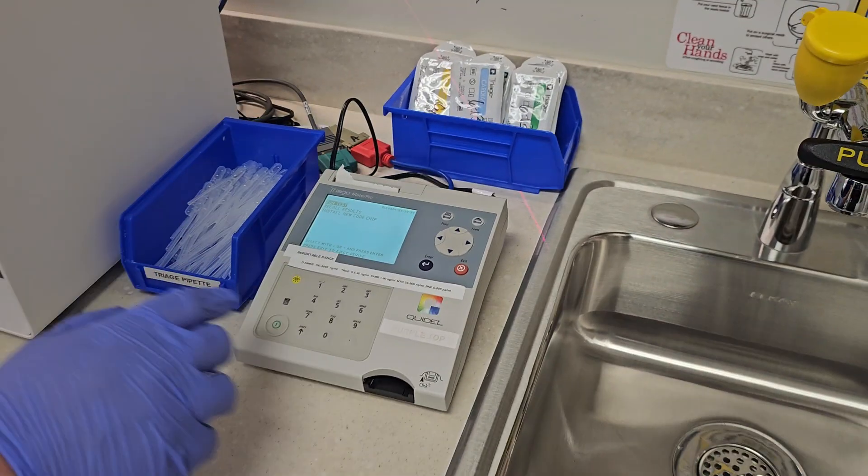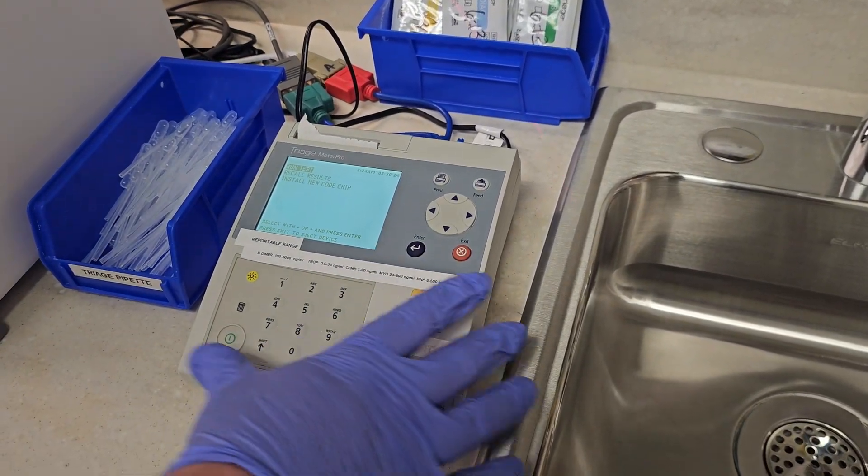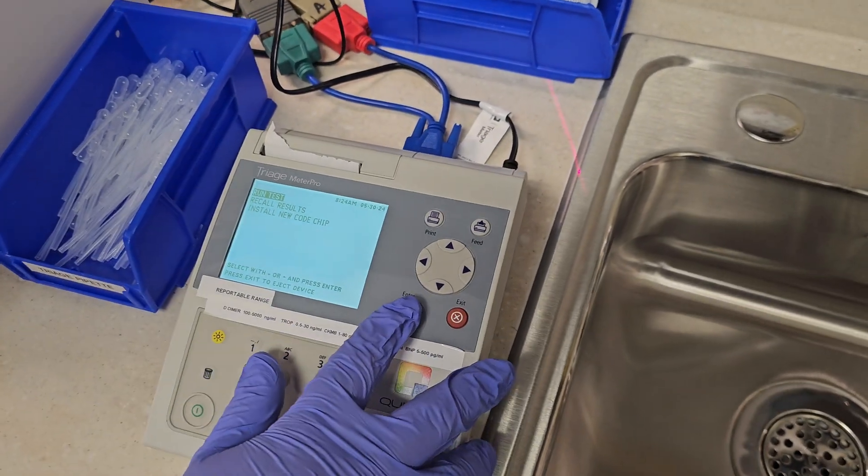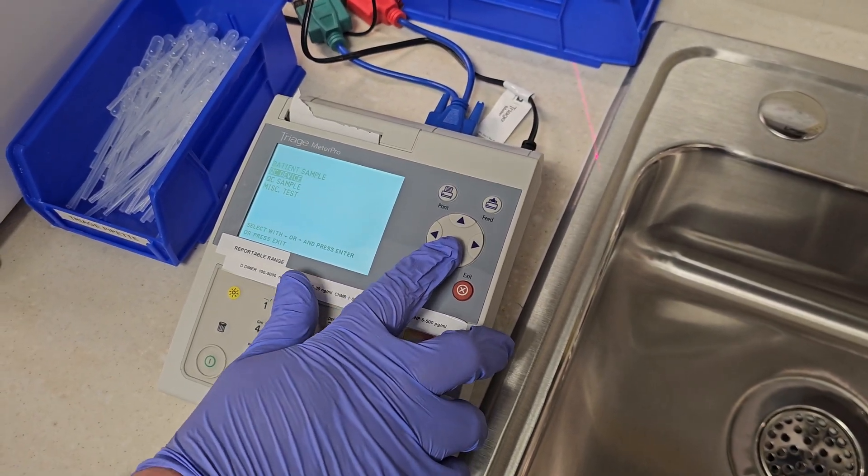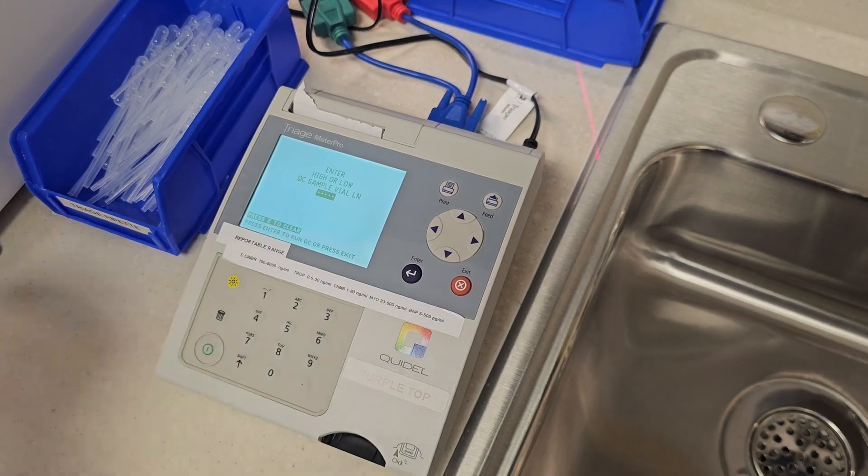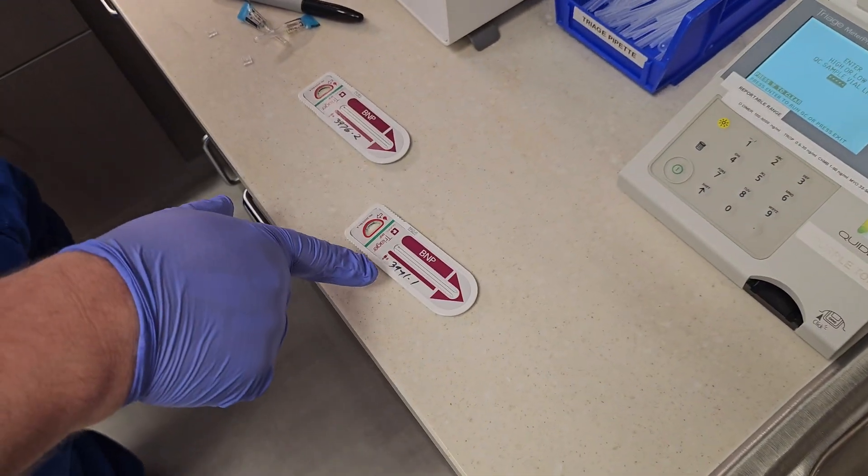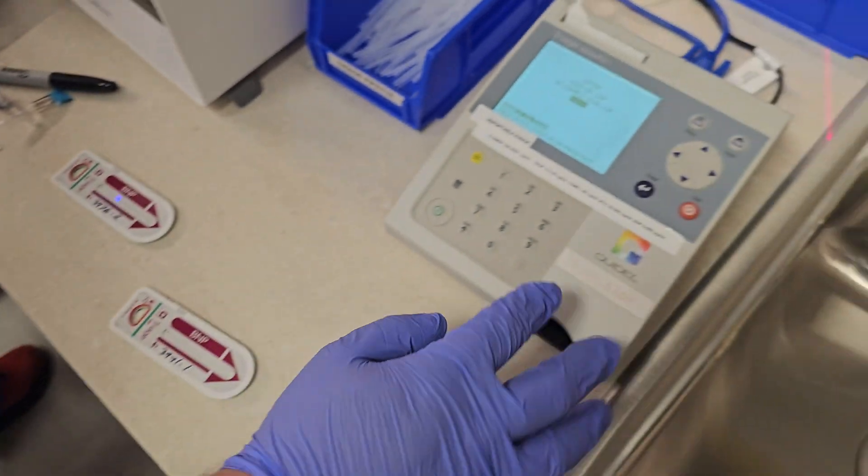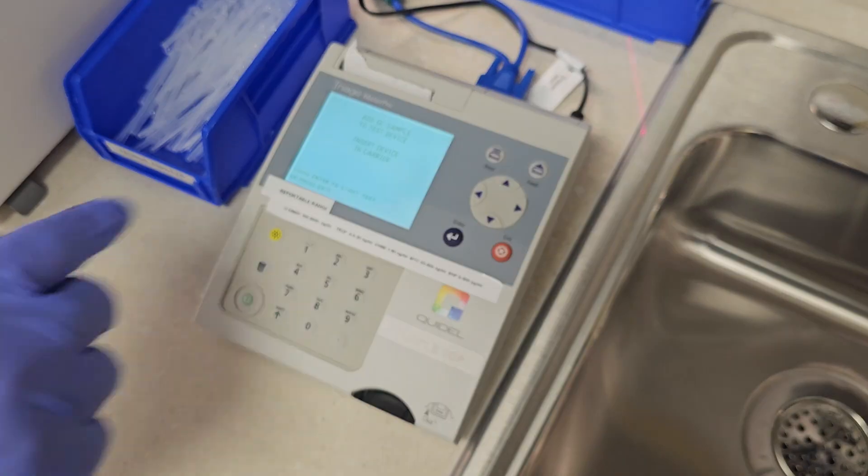We'll come to the analyzer here. We're going to go to run test, hit enter. We're going to go down to QC sample, hit enter. It's going to ask me for that number. There is a letter that comes before that number, just disregard the letter and put in the number 3971. That's my level one.